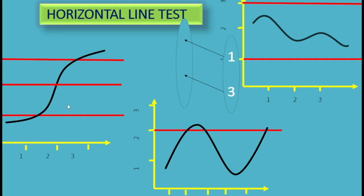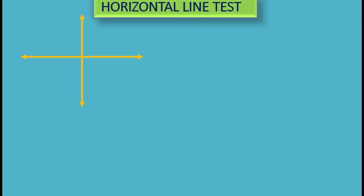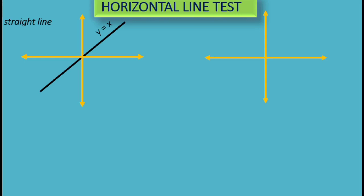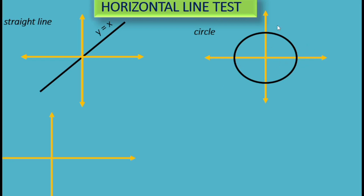We will now see some practical problems — which functions are one-to-one and which are not. The first problem is a straight line: y = x. Applying the horizontal line test — at any point in the co-domain, the horizontal line intersects at only one point. The second practical problem is a line where the horizontal line intersects the curve at more than once, so it is not one-to-one.